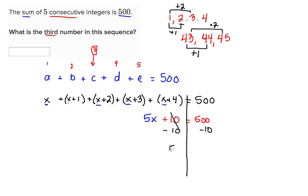Now 5x equals 490. 490 divided by 5 is going to be, calculate that real quick, 98. So we've concluded that x equals 98.